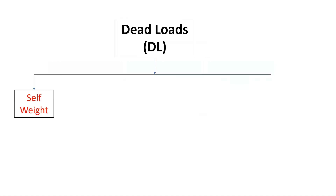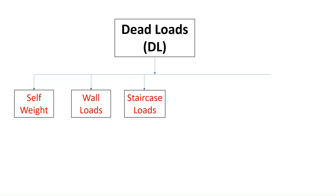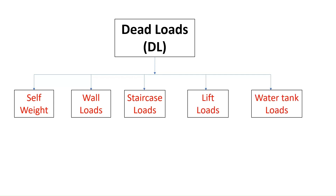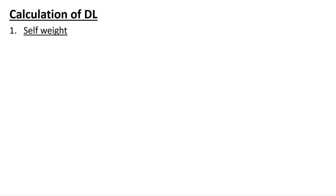Coming to dead loads, we can have self weight of the structure, wall loads, staircase loads, lift loads, and water tank loads. Regarding the self weight of the structure, in ETABS we do not have to manually apply it — ETABS will calculate the self weight and apply it automatically. For example, if you have modeled a slab, ETABS will calculate the self weight of that slab and assign it to the structure. In Staad Pro, however, you need to manually add the self weight and assign it to the whole structure, but in ETABS it is not required.